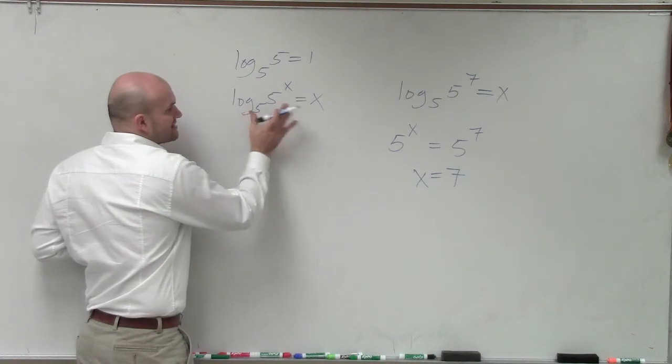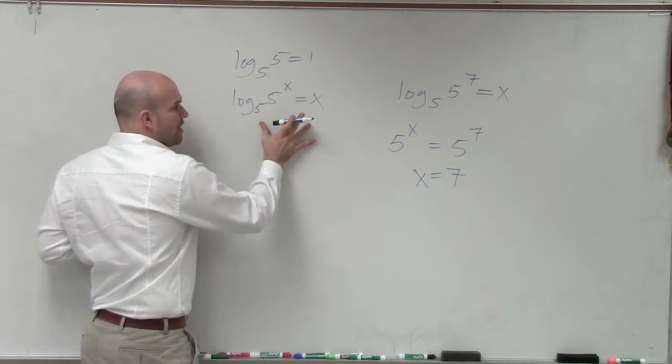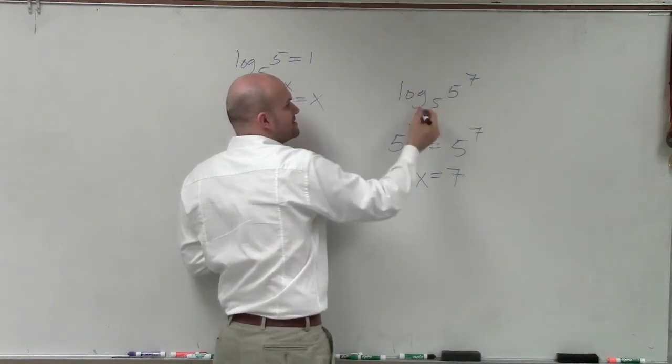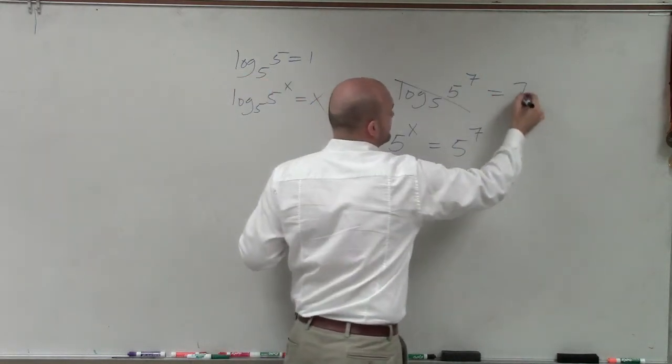That's why this rule works for logarithms. So therefore, without having to show all this work, you can say log base 5 of 5 raised to the seventh is just going to equal 7.